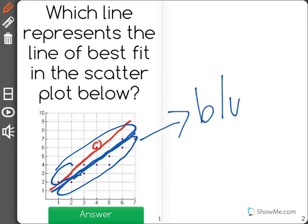So in this case the blue line represents the line of best fit because it seems to create a line that represents the data more accurately.